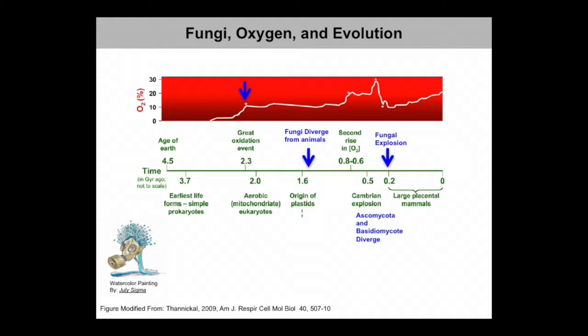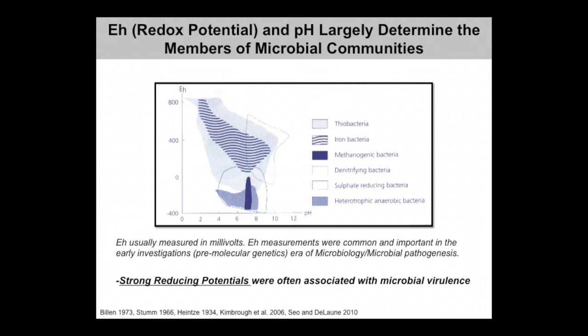The second point is that fungi and animals diverged about 1.5 billion years ago, at a time when oxygen levels were around 10% in the atmosphere. This divergence in time gives us a lot of opportunity to find Achilles heels in the genomes of these organisms for how they deal with oxygen and altered redox environments. The habitats that an organism can grow in are restricted by redox potential and pH, and redox potential is primarily driven by the amount of oxygen in a given environment.